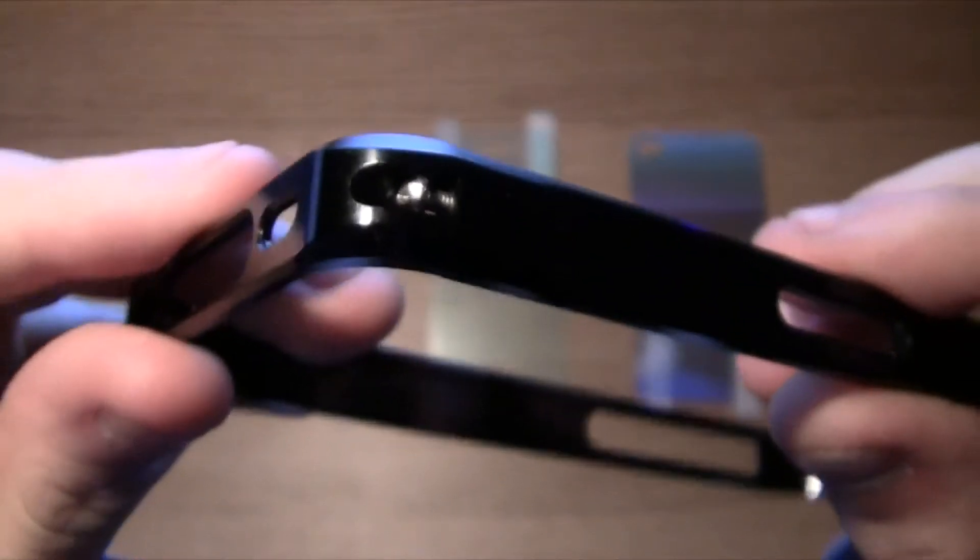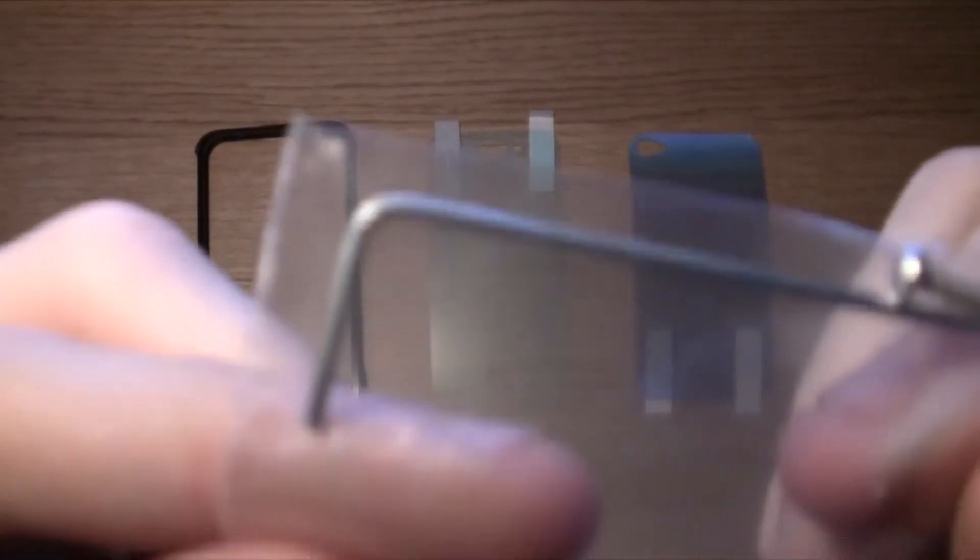The bumper itself is held together by two screws which you can see there. They do provide you with an allen key as you can see there and you also get an extra screw.